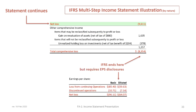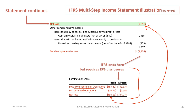Finally, we have our required EPS disclosures: a loss from continuing operations, a discontinued operations value, and a total net loss of $9,611,000 per share — a function of the net loss. Don't worry about how the basic and diluted EPS calculations were derived; we will cover that in another tutorial.